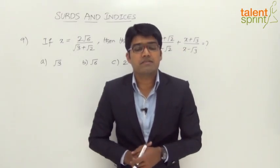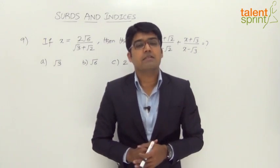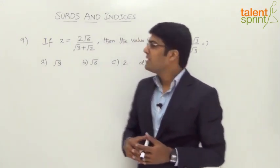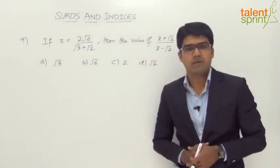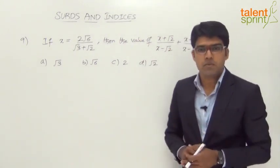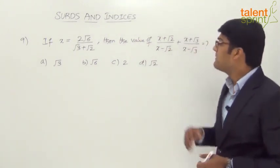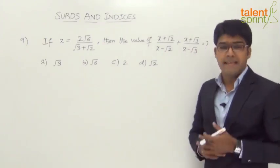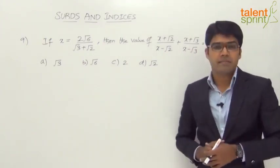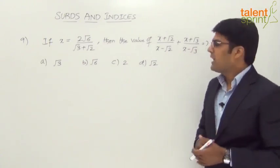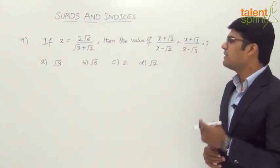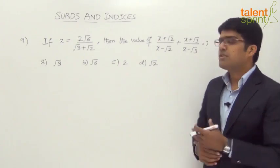Let us take another question from an earlier SSC CGL exam. The question says: if x equals 2√6 divided by (√3 + √2), then find the value of (x + √2)/(x - √2) + (x + √3)/(x - √3). The four answer options are √3, √6, 2, and √2.